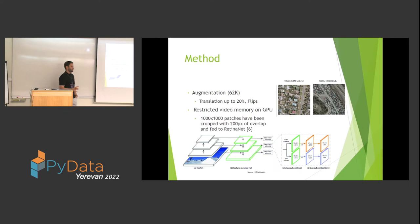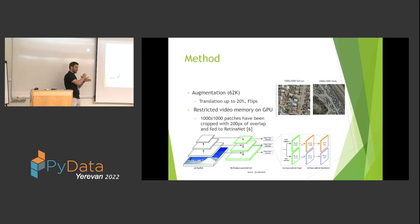The images are large — we can't fit an 18,000×18,000 pixel image into a network. So we slide over the image, picking 1,000×1,000 patches and feeding them to the network. The step size is 800 pixels, so the current and previous patch overlap by 200 pixels, ensuring we don't miss cars at the borders between patches. This was done by a 20-year-old bachelor student whom I was supervising.